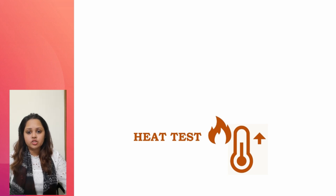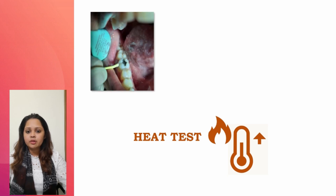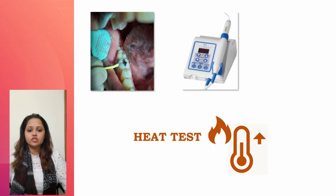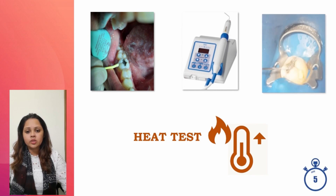One way to perform the heat test is by using a stick of heated gutta-percha. Vaseline is applied to the teeth first, and then a gutta-percha stick is heated with a naked flame or an electrical heater until it becomes soft and glistens, and is then applied to the surface of the test tooth. One problem with this test is that we cannot control or maintain the temperature, so a delivery device can be used to maintain the gutta-percha at a particular temperature. This test may be difficult on posterior teeth due to limited access. Hot water is another method: the tooth is isolated with a rubber dam and then bathed with water from a syringe.